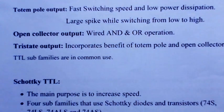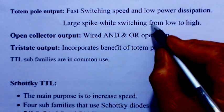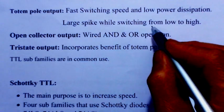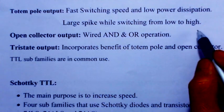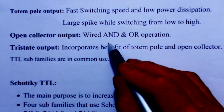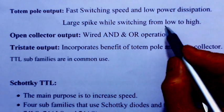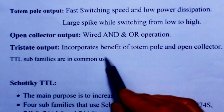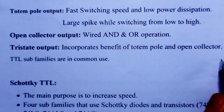Key TTL output configurations: the totem pole output provides fast switching speed and low power dissipation, but has a limitation of a large current spike when switching from low to high. Open collector configuration allows wired-AND and wired-OR operations, which the totem pole output does not support. The tri-state output incorporates the benefits of both totem pole and open collector TTL families.